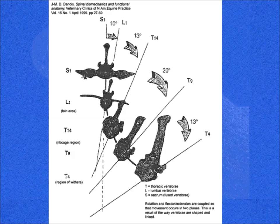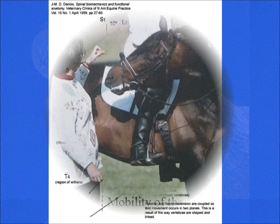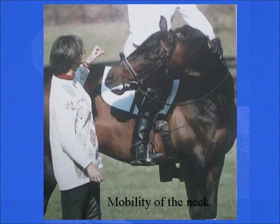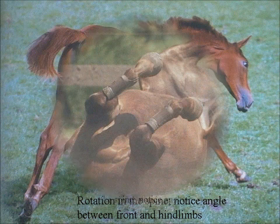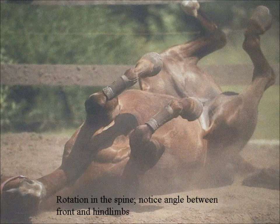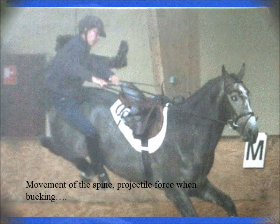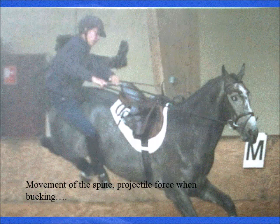This picture shows a lot of lateral flexion in the neck — that's clearly possible. This picture is a bucking horse, and you can see there's rotation. The hind end and the front end have a different angle. And when they roll, that's the same thing — there's clearly rotation in the spine. When they buck and rotate, you fly off, because it's a lot of force.